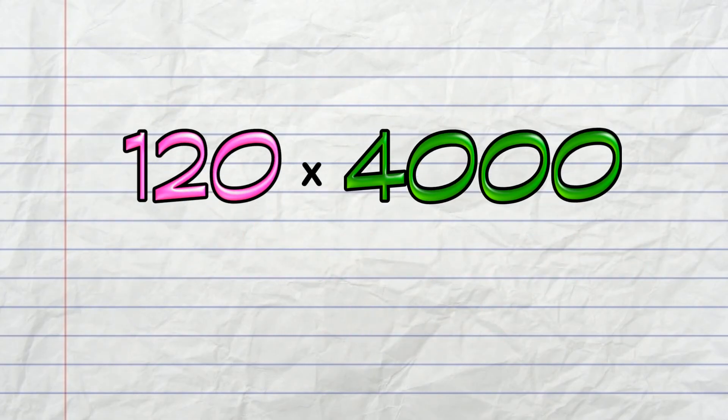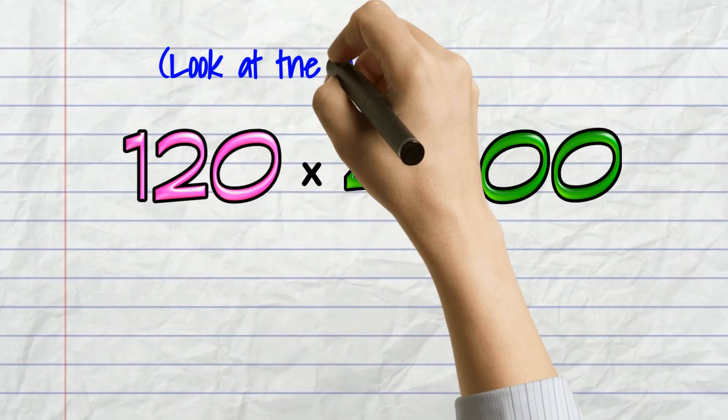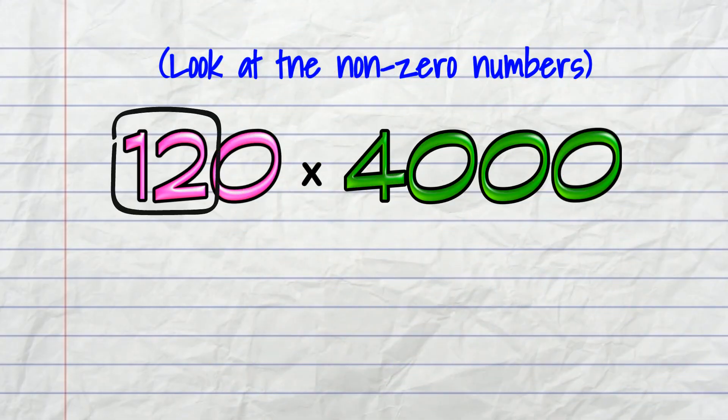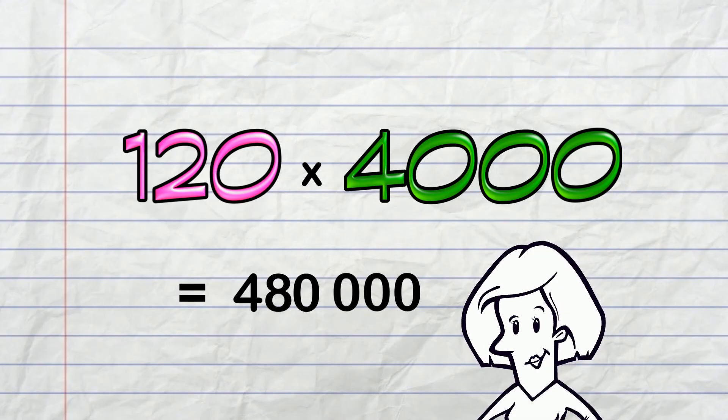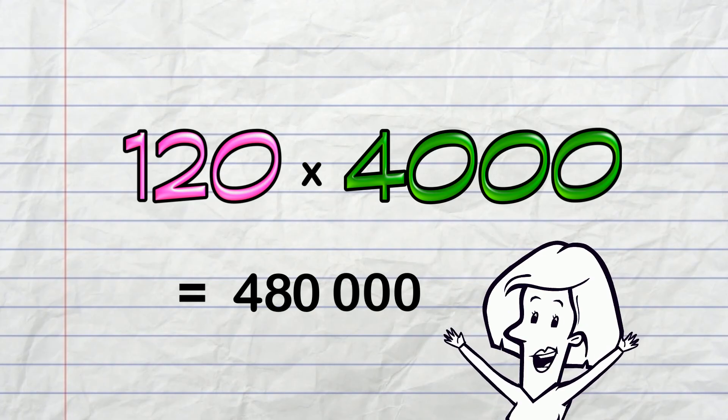What about 120 times 4,000? Well, let's look at the non-zero numbers. We know that 12 times 4 is 48, and tack on those zeros! It gives us 480,000!